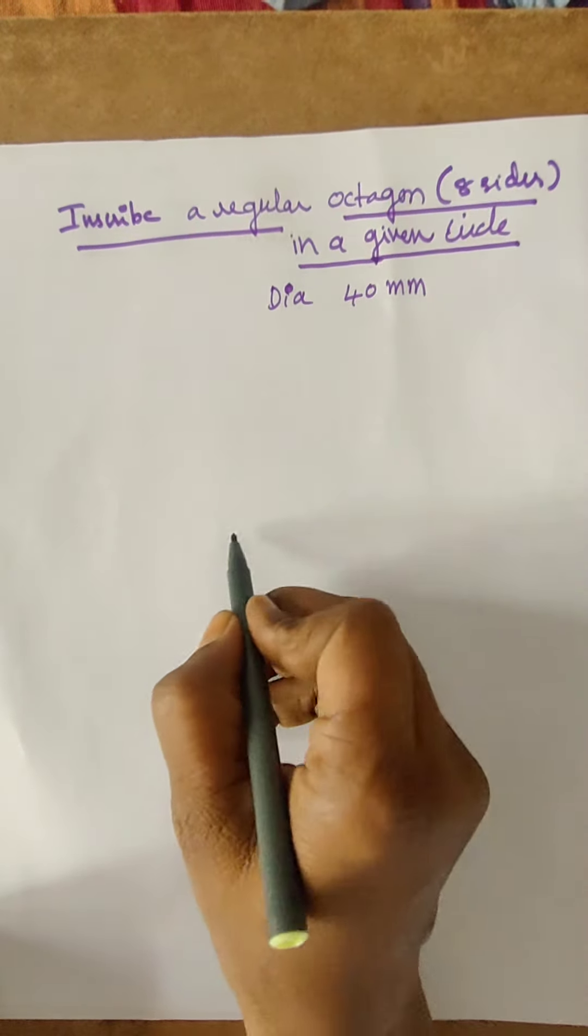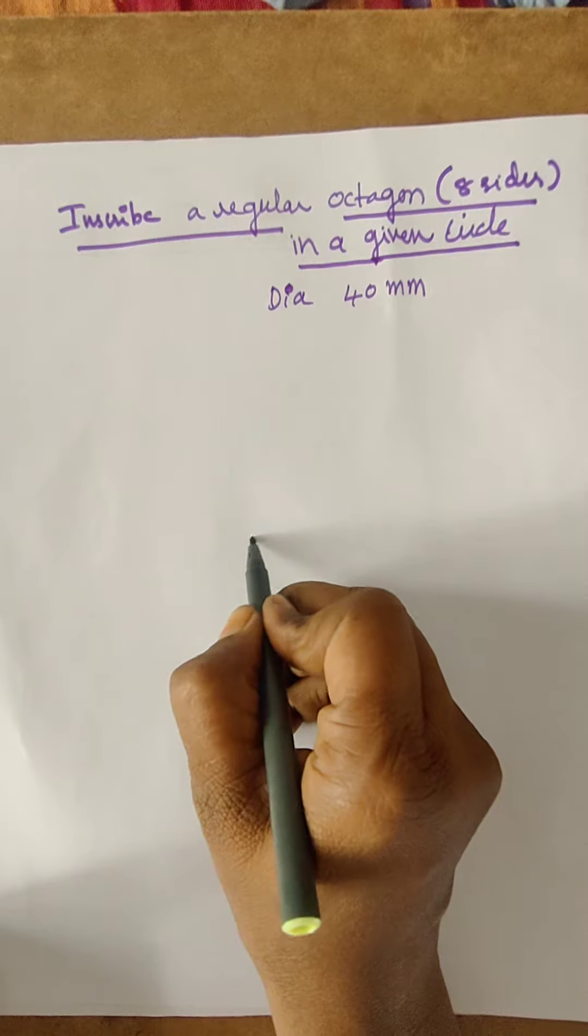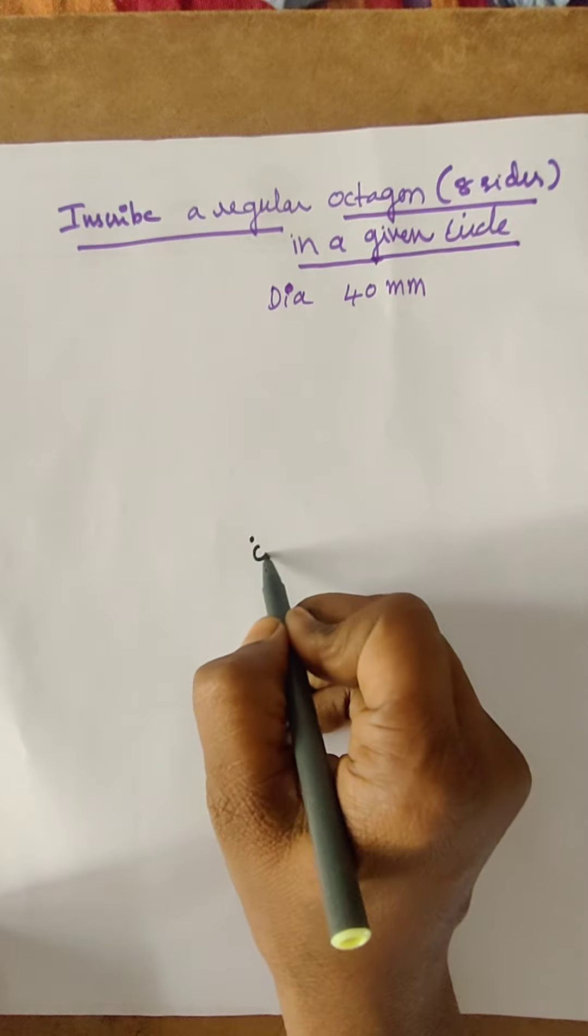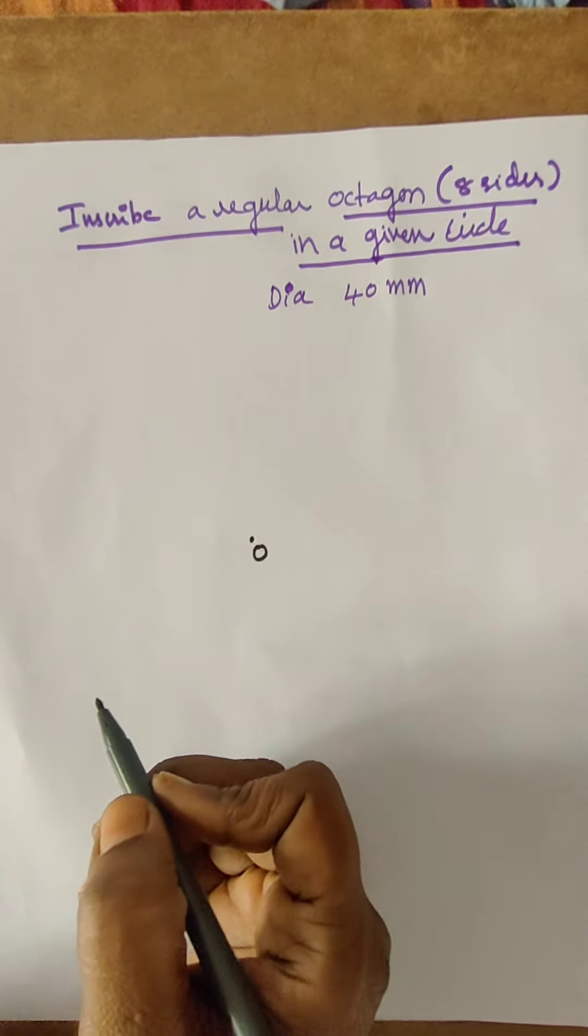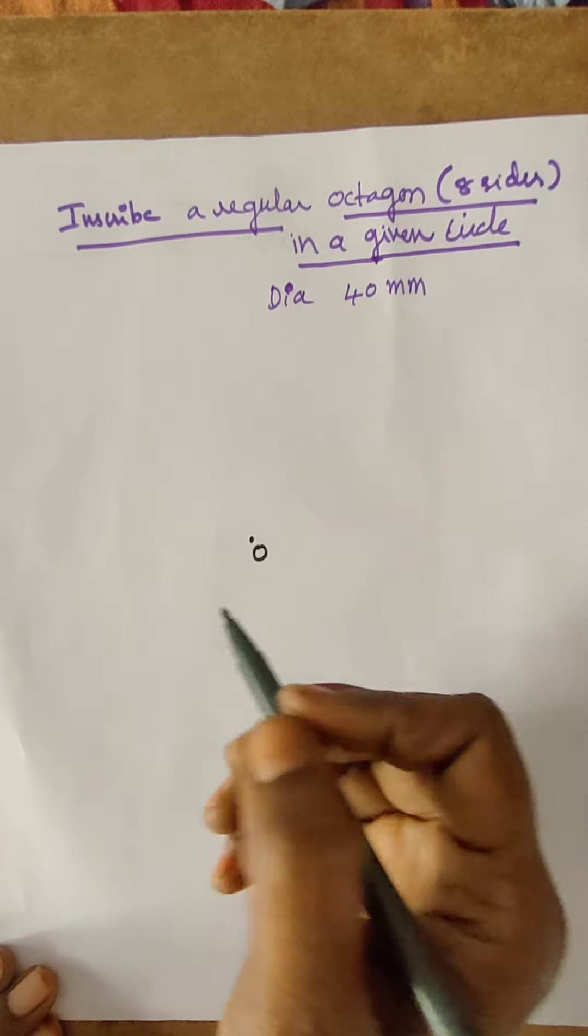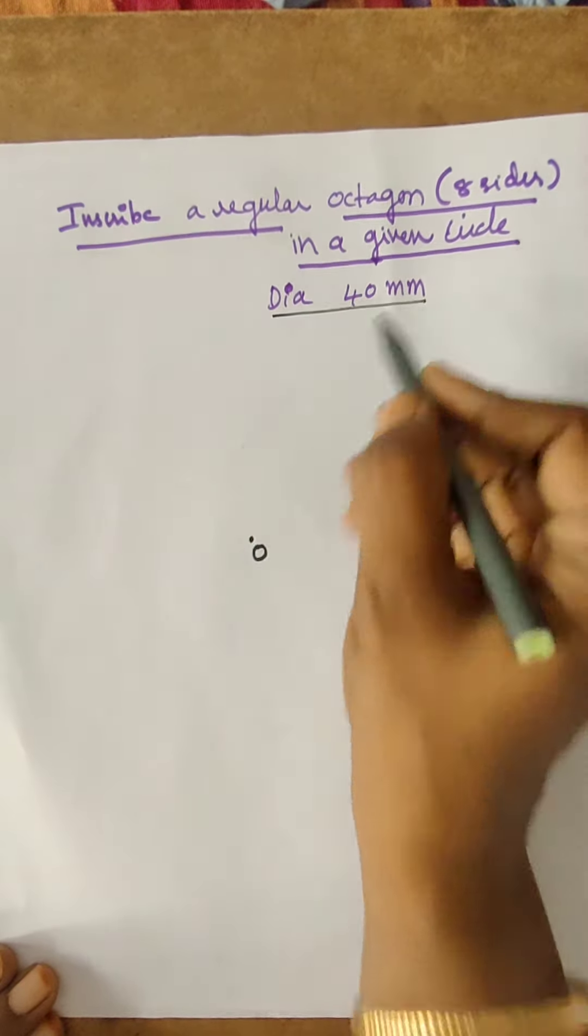Further, what do we have to do? Just go through. Take center C, sorry O, take center O or C, whatever it may be. First, draw a circle with the given diameter.